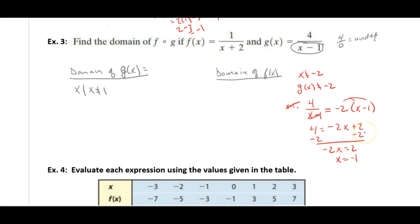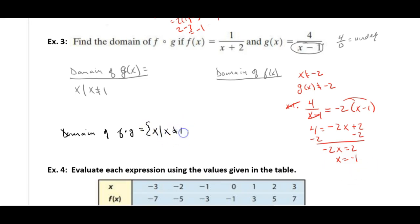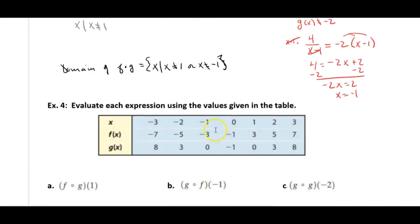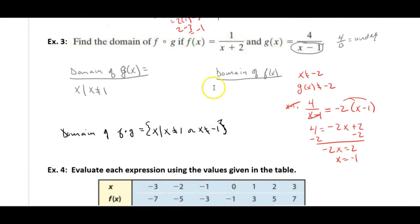So the overall domain of f of g is x such that x cannot equal 1 or x cannot equal negative 1. If you're not understanding this right now, it's not a huge deal — we'll figure it out. It's not the end-all be-all of the chapter.